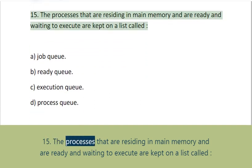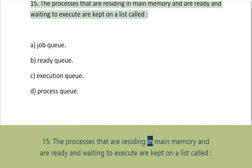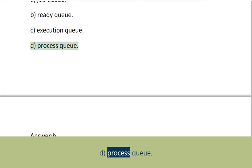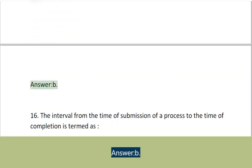Question 15: The processes that are residing in main memory and are ready and waiting to execute are kept on a list called: A. Job Q, B. Ready Q, C. Execution Q, D. Process Q. Answer: B.